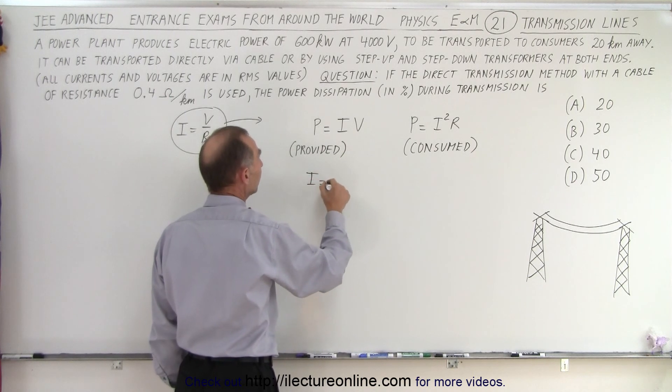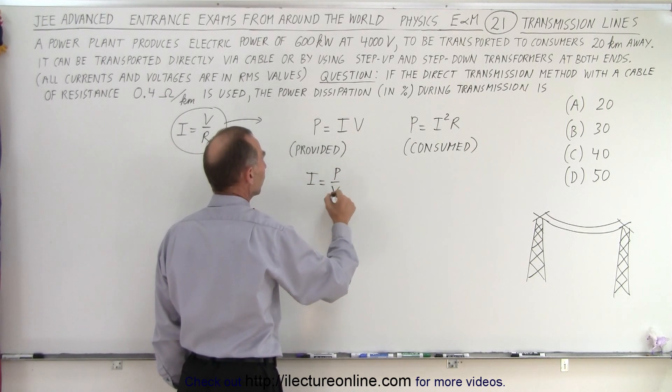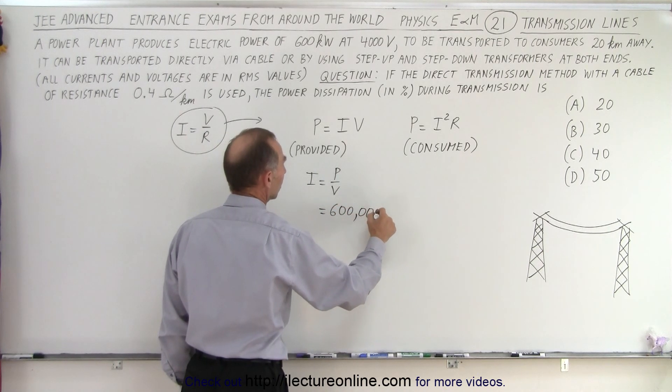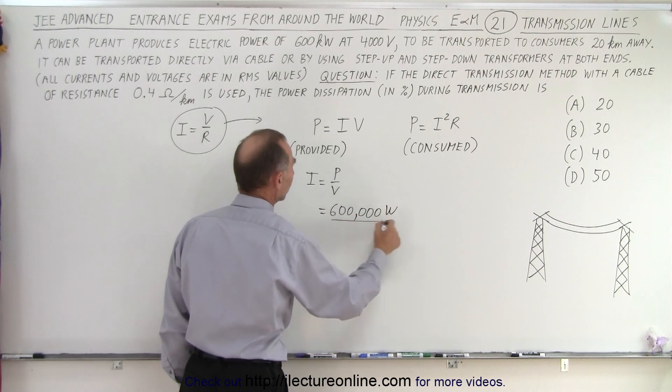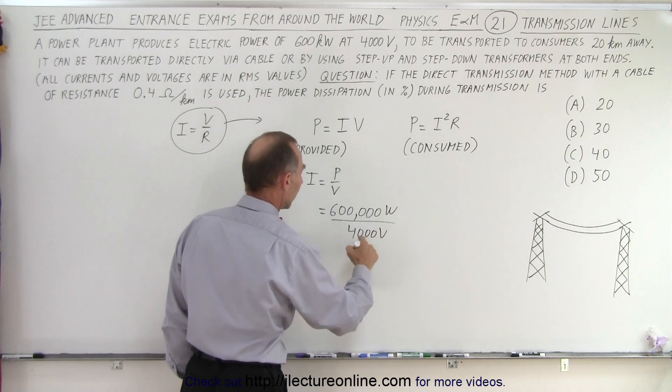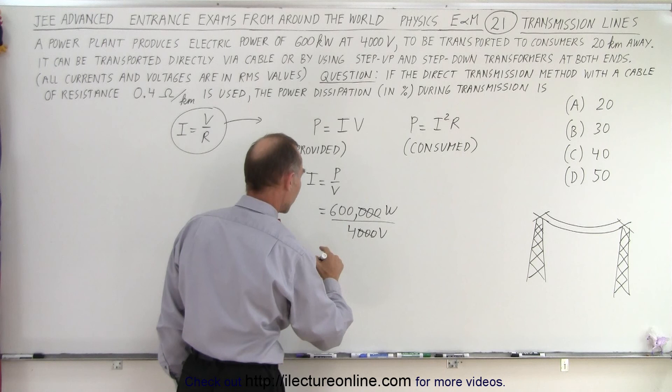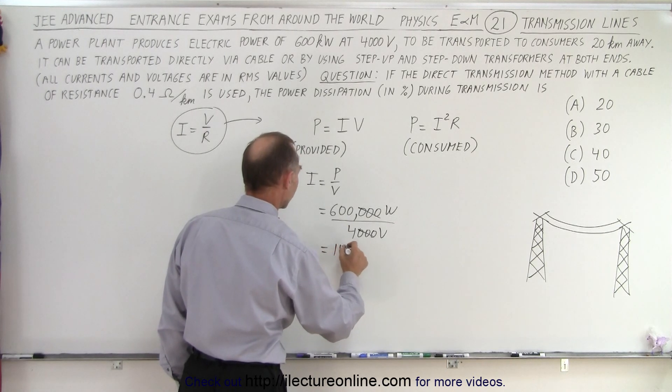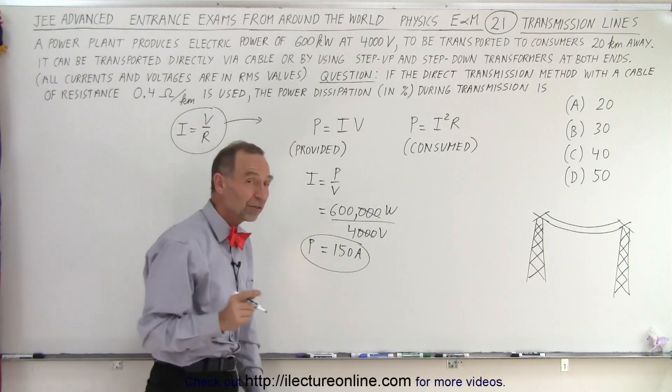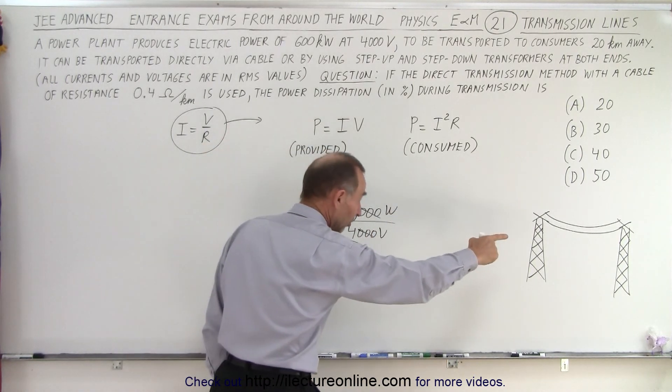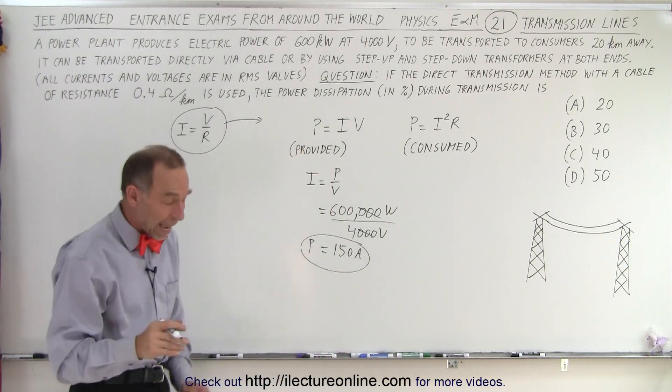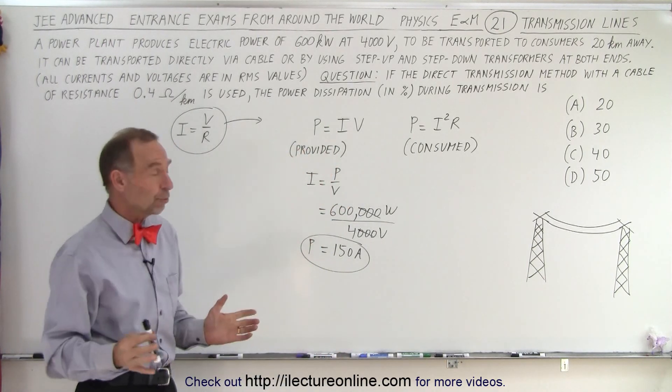So the current I is equal to the power divided by the voltage. So in this case, that is 600,000 watts or 600 kilowatts, so 600,000 watts divided by voltage of 4000 volts. And let's see here, that's equal to 150 amps. So by sending 600 kilowatts of power across the transmission lines at 4000 volts, we need 150 amps of current, which is a huge amount of current.